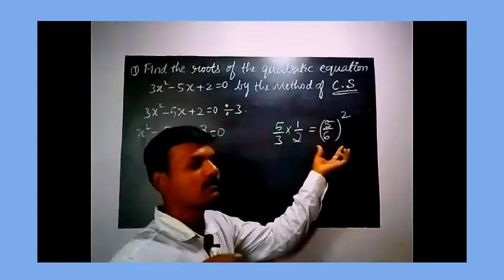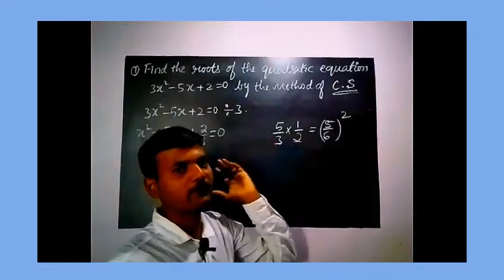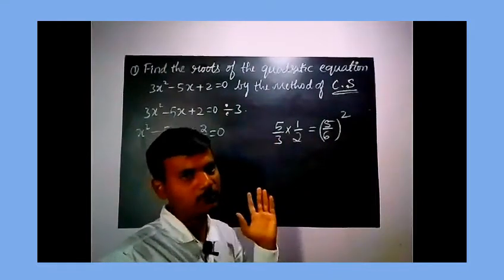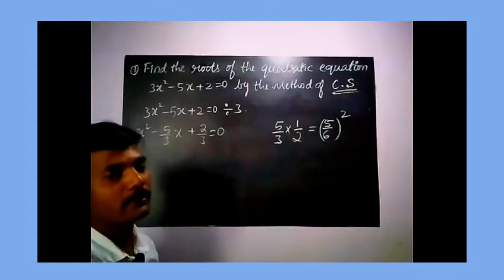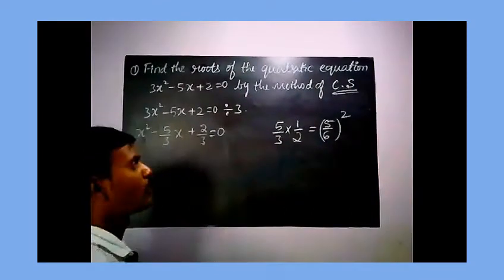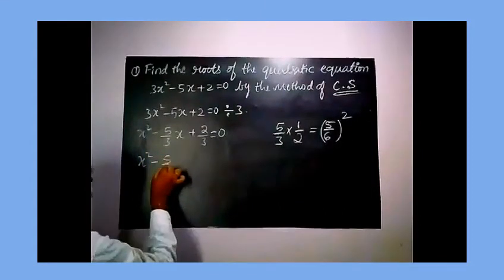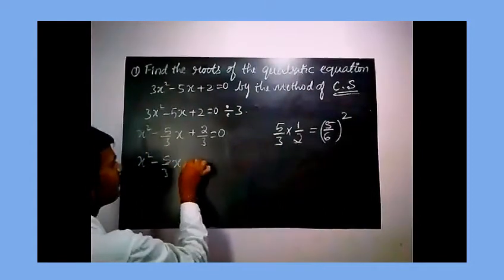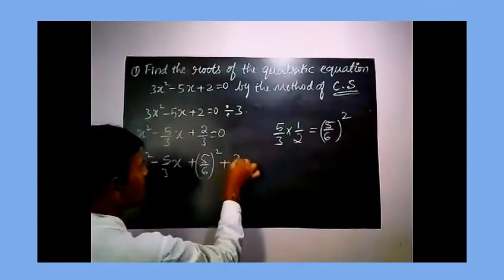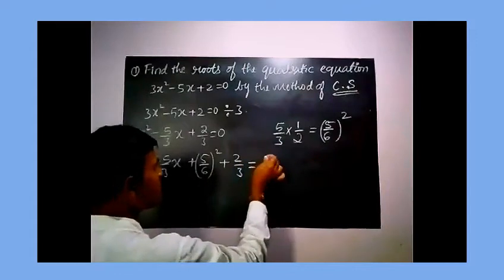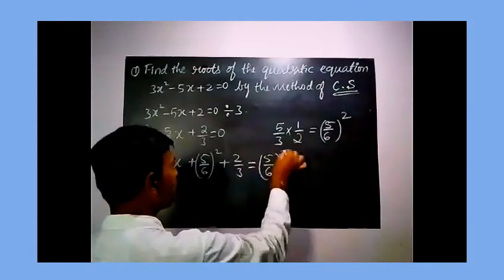We need to add the squared value of that term to both sides of the expression from the previous step. By squaring 5/6, we add it to both LHS and RHS. So we get: x squared minus 5/3 x plus (5/6)² plus 2/3 equals (5/6)².